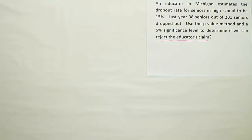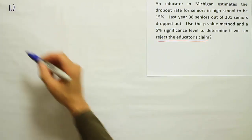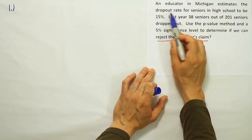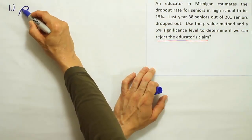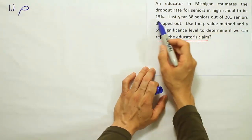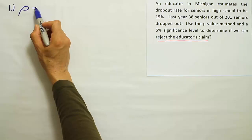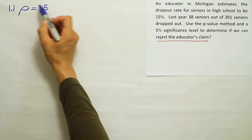So if that's the case, let's identify the claim. The claim in the problem is going to be that an educator in Michigan estimates the dropout rate, that's going to be the proportion rho, to be 15%. So to be 15% means that he thinks it's equal to 15%. Alright, so that's our claim.